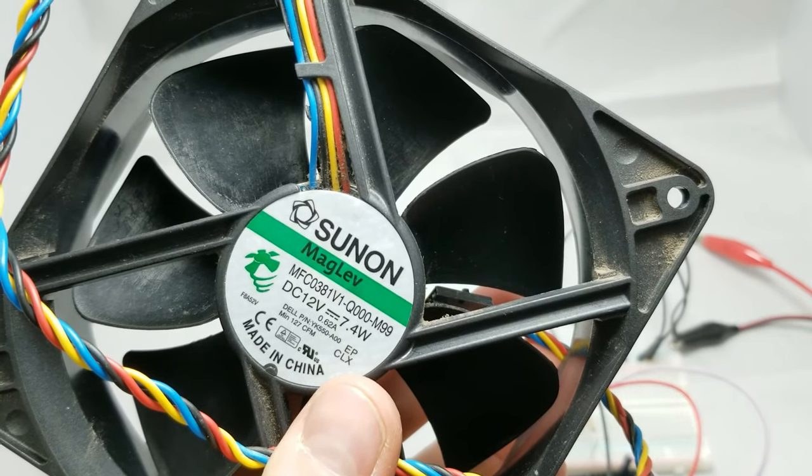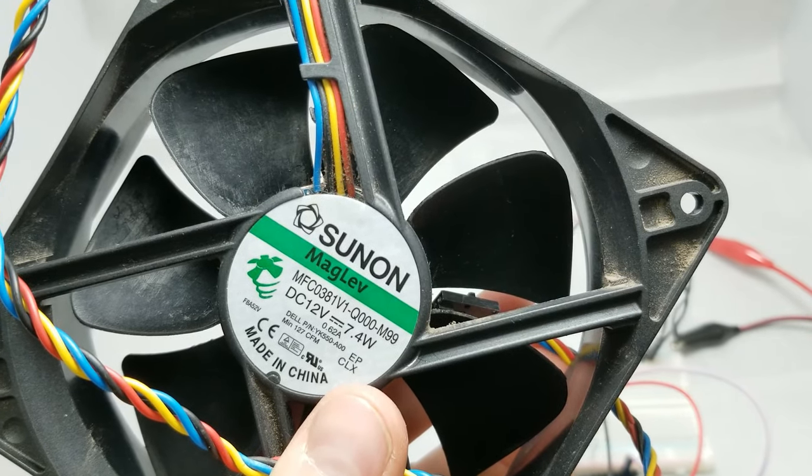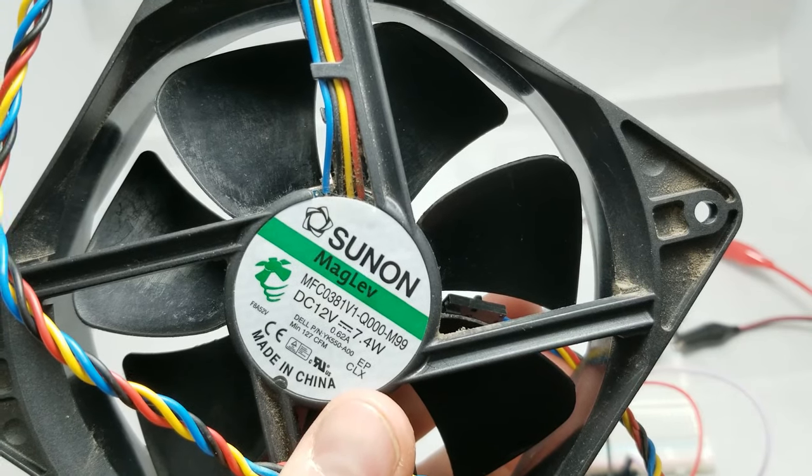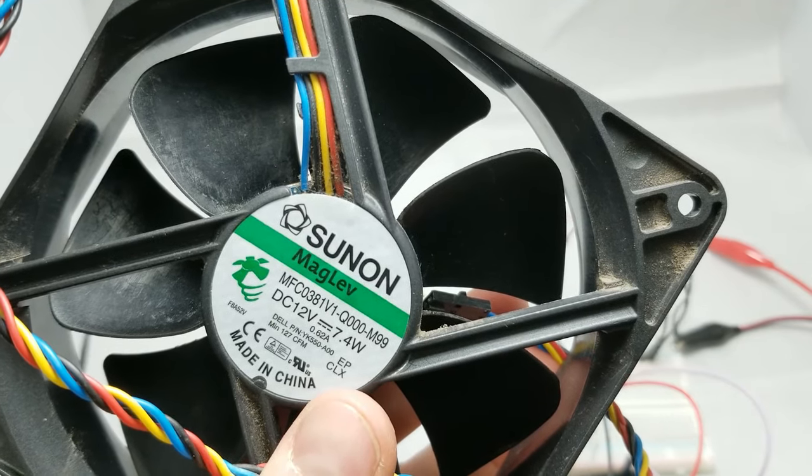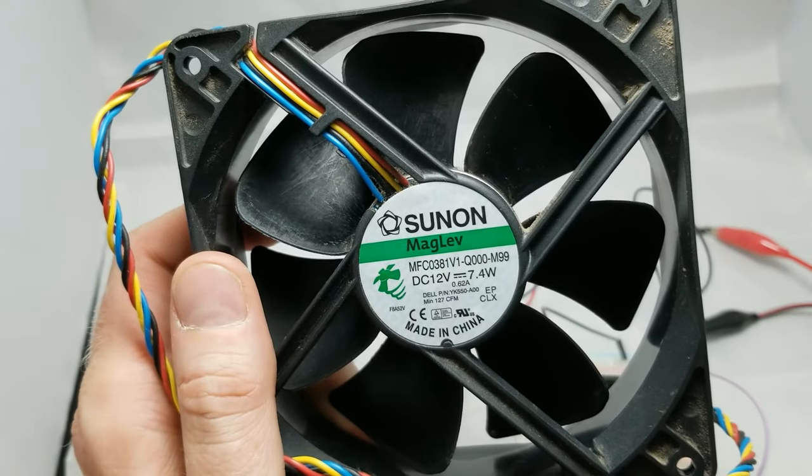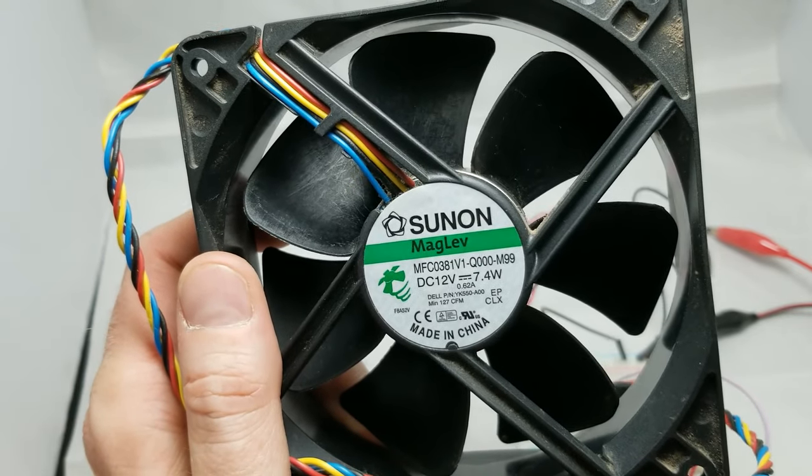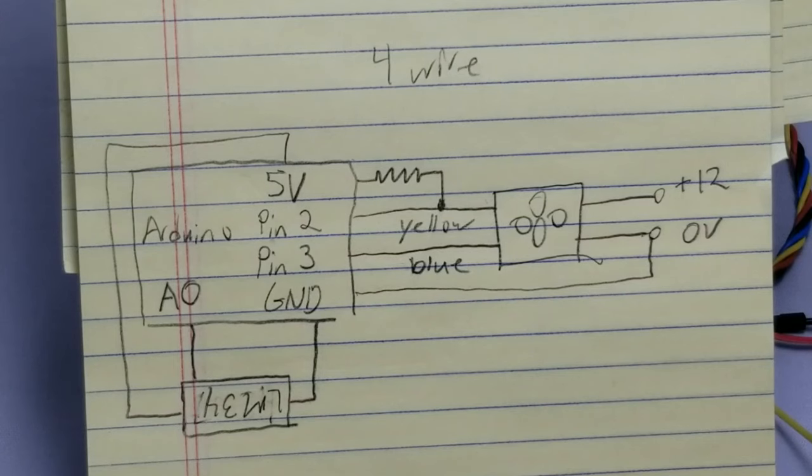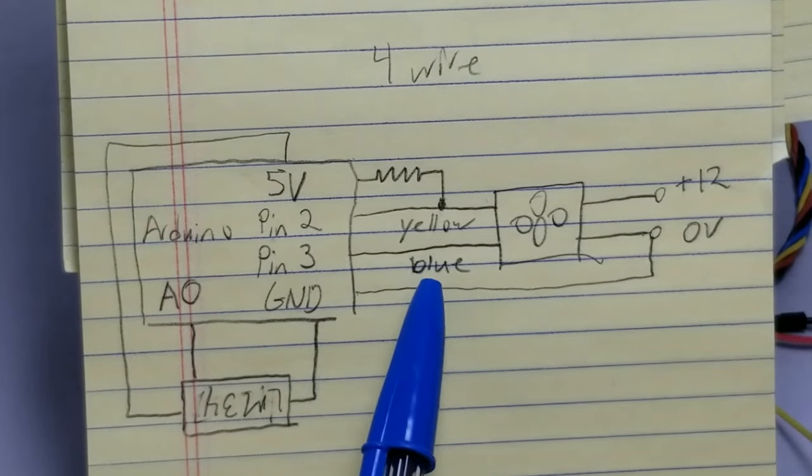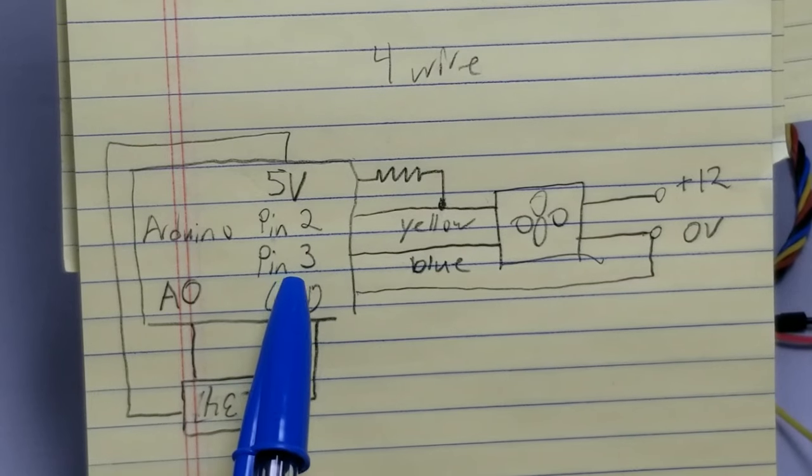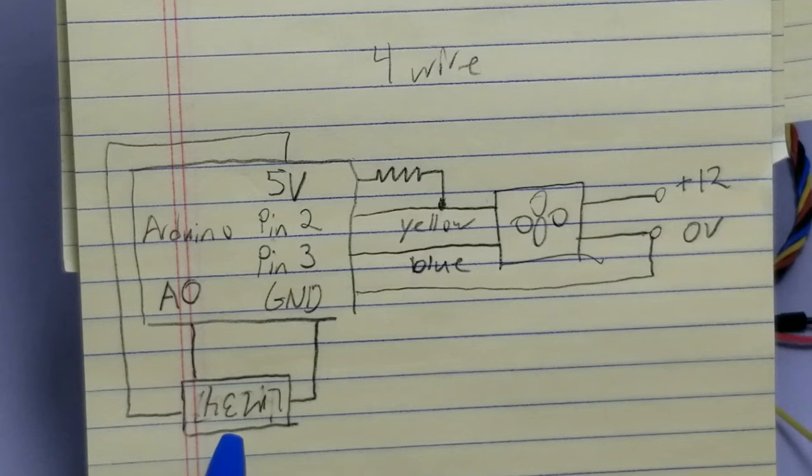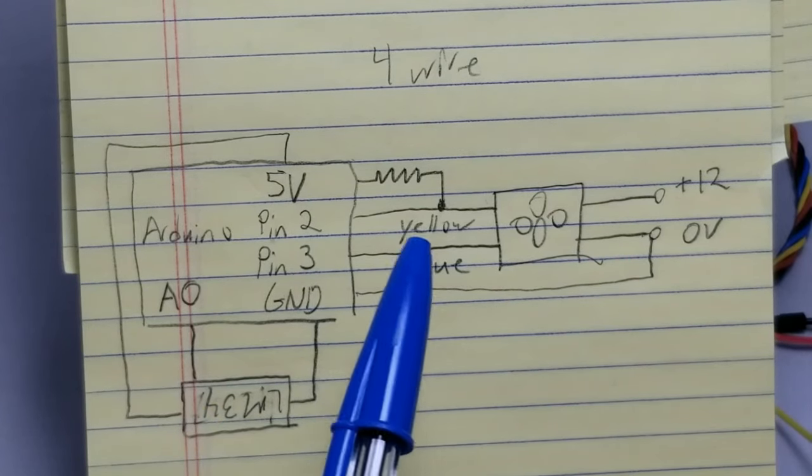The blue wire on this four-wire fan now gives us the ability to control the speed of this fan by connecting the blue wire directly to the Arduino. This fan has its own PWM control built right in. No need to use an external MOSFET. The wiring for this fan will be very similar to the last one, except as you can see, the blue wire will connect directly to pin 3 on the Arduino. We're also going to reconnect our temperature sensor so that we can have the speed of the fan be controlled by the temperature.